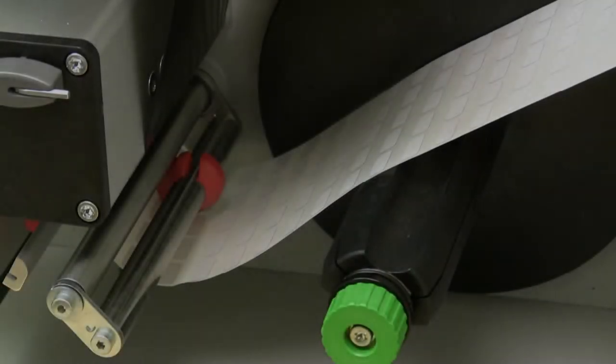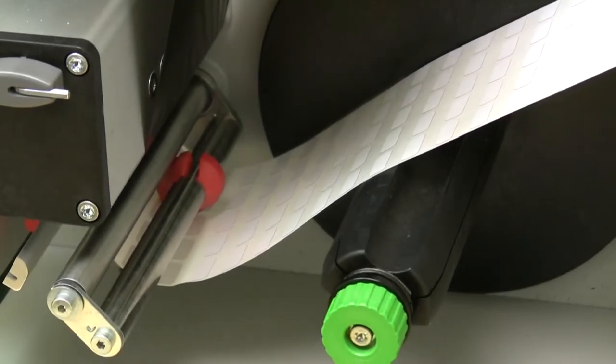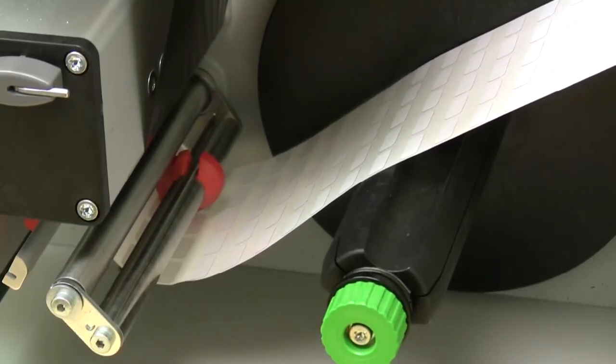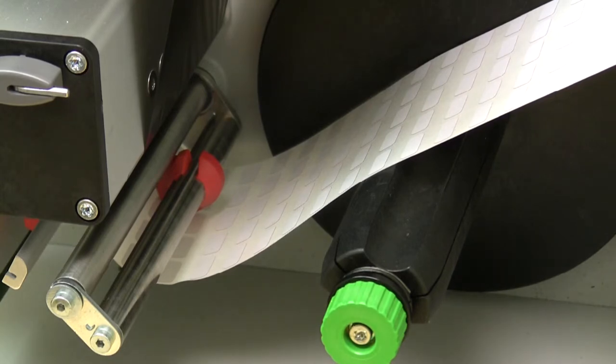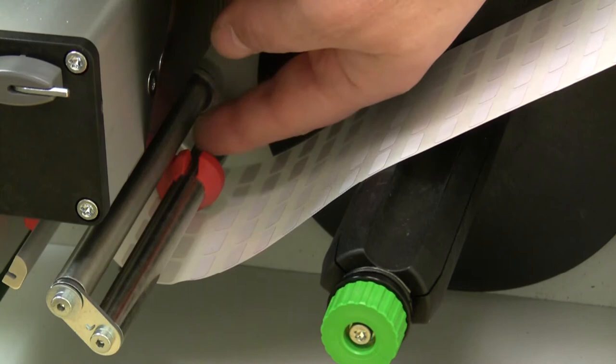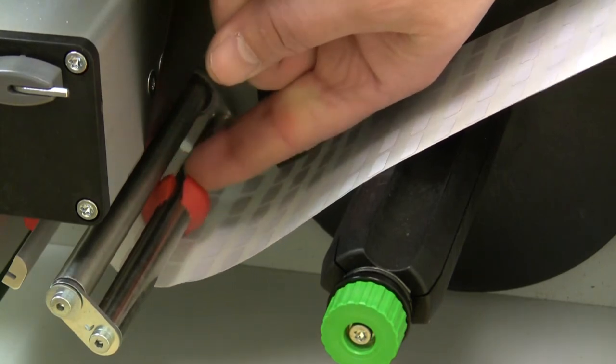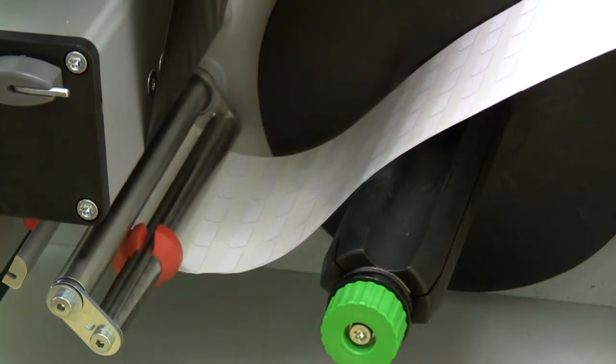Once the labels are in place, we do want to make sure that the guide ring gets moved out to a position that is on the outside of the label web. This will prevent the web from moving left to right during printing. It simply slides over and then adjusts back against the edge of the web.